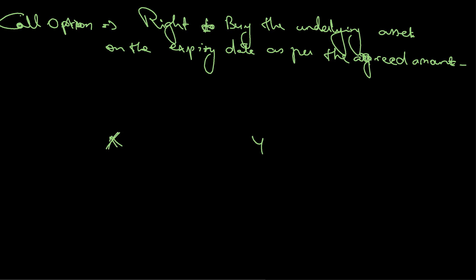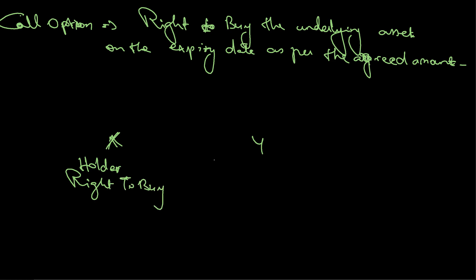X wants to buy this call option, so he is called the holder — because he is holding the right to buy the underlying asset. Y, on the other hand, is called the writer, and he has the obligation to sell.